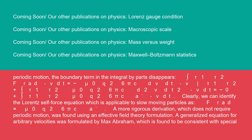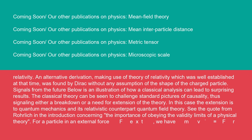A more rigorous derivation, which does not require periodic motion, was found using an effective field theory formulation. A generalized equation for arbitrary velocities was formulated by Max Abraham, which is found to be consistent with special relativity. An alternative derivation, making use of theory of relativity, which was well established at that time, was found by Dirac without any assumption of the shape of the charged particle.